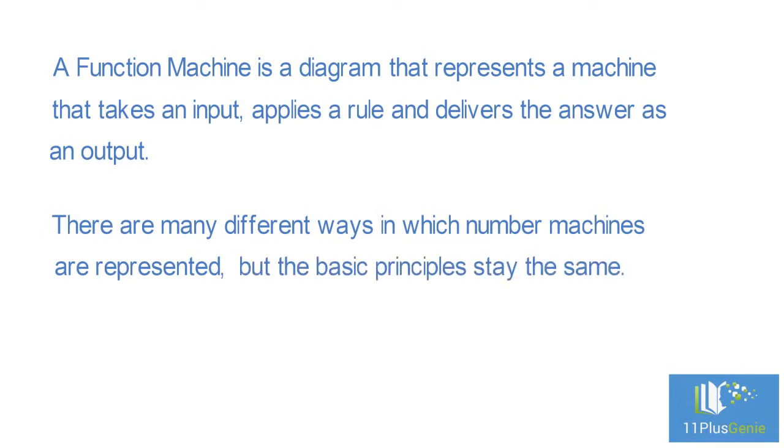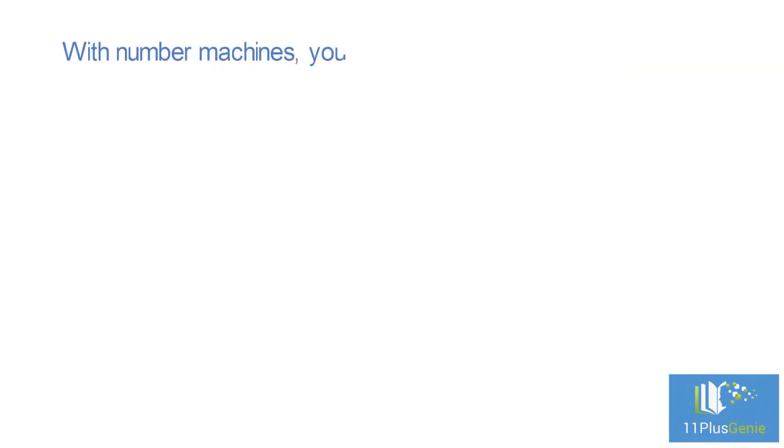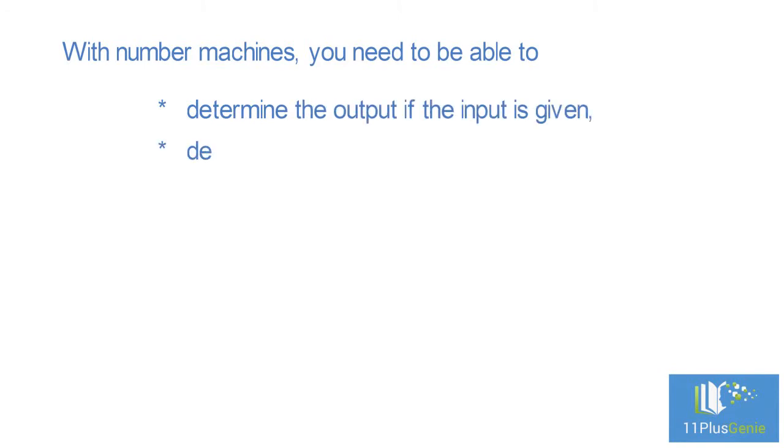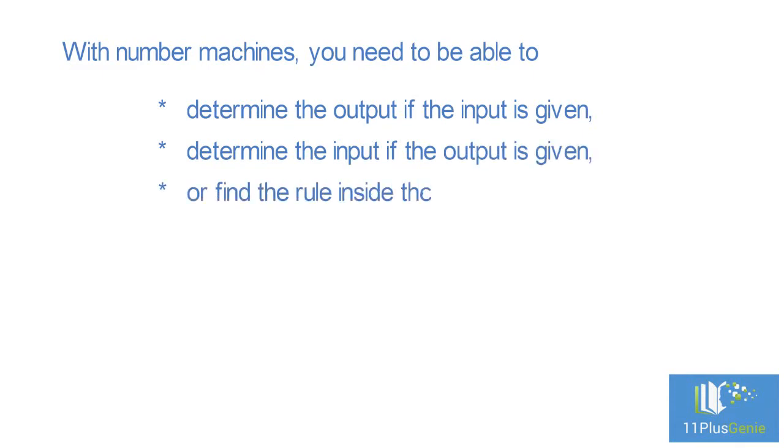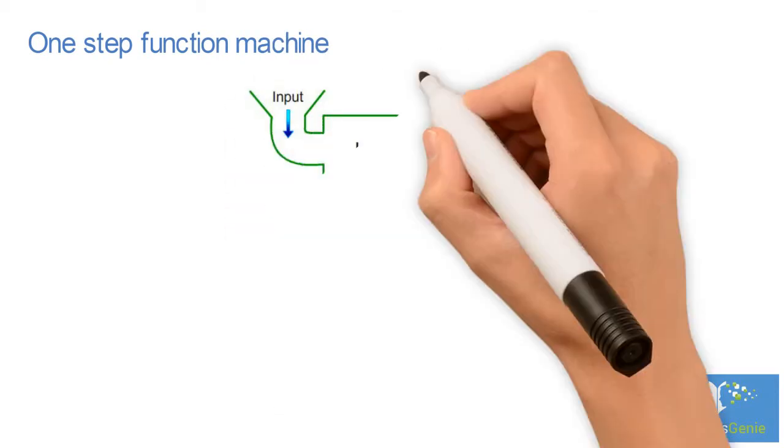With number machines, you need to be able to determine the output if the input is given, determine the input if the output is given, or find the rule inside the machine. Let's look at a simple one-step function machine.